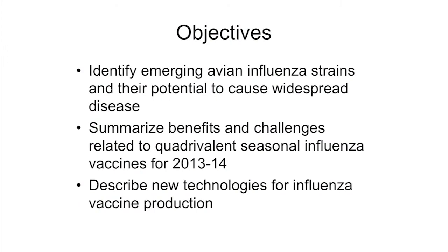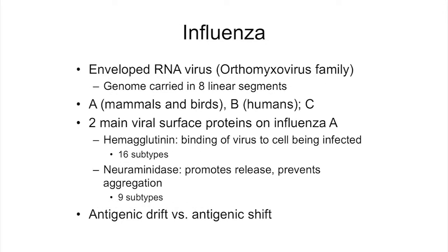Here are the objectives. I want you to be able to identify emerging avian flu strains and their potential to cause widespread disease. We'll summarize the benefits and challenges related to the new availability of quadrivalent seasonal flu vaccines for this winter, and I'll spend some time talking about new technologies for flu vaccine production and the new flu vaccines now available.